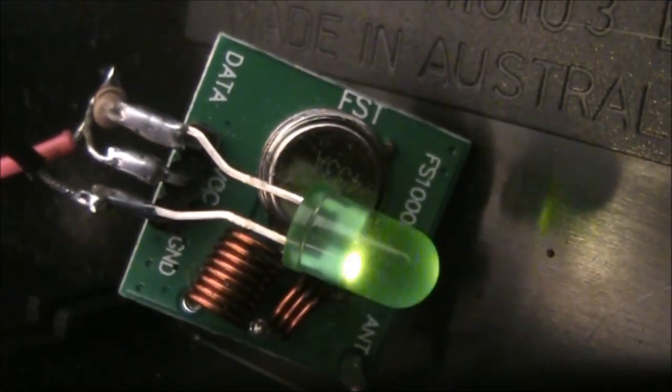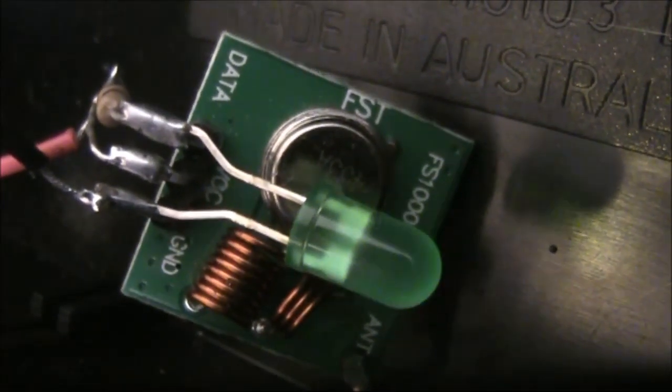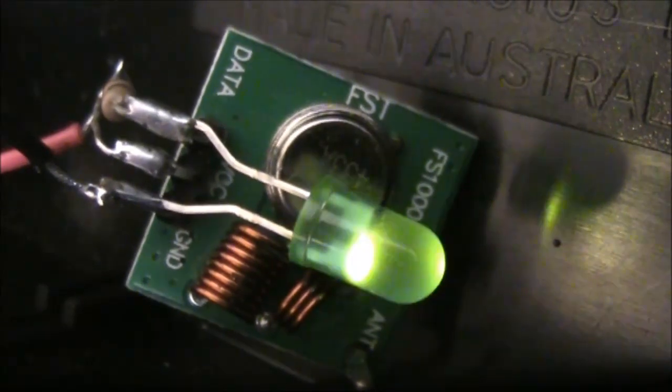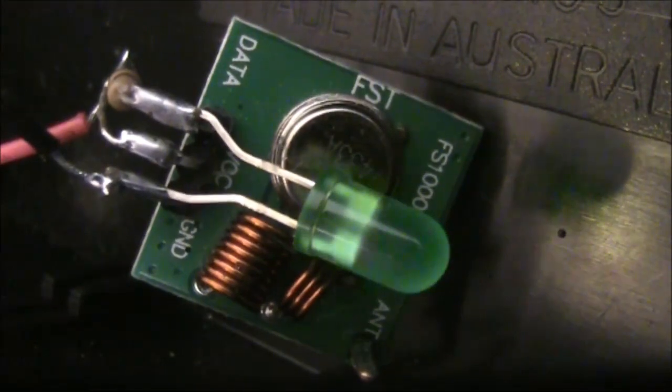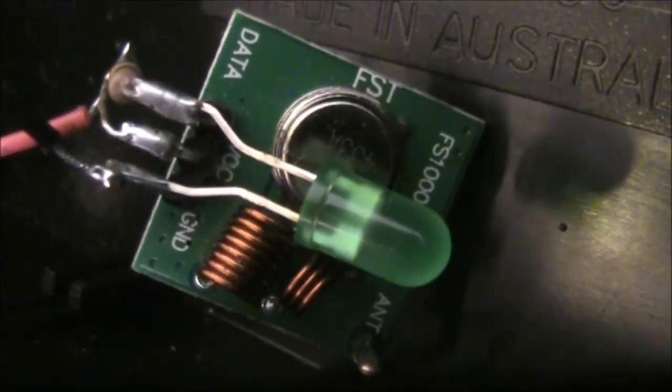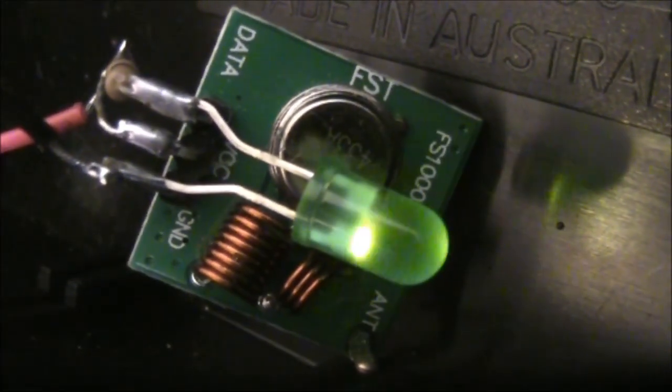The circuitry of these modules is very simple. As you can see, there are four connections. On the left there's a data in, a VCC which is the supply rail, and a ground. At the bottom is the antenna connection.